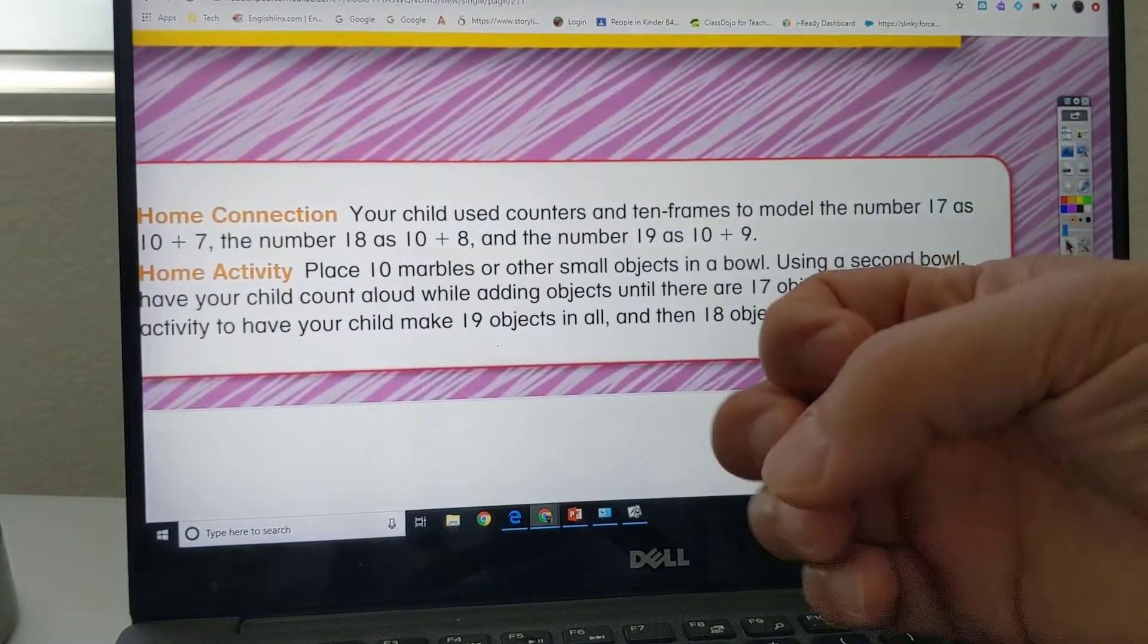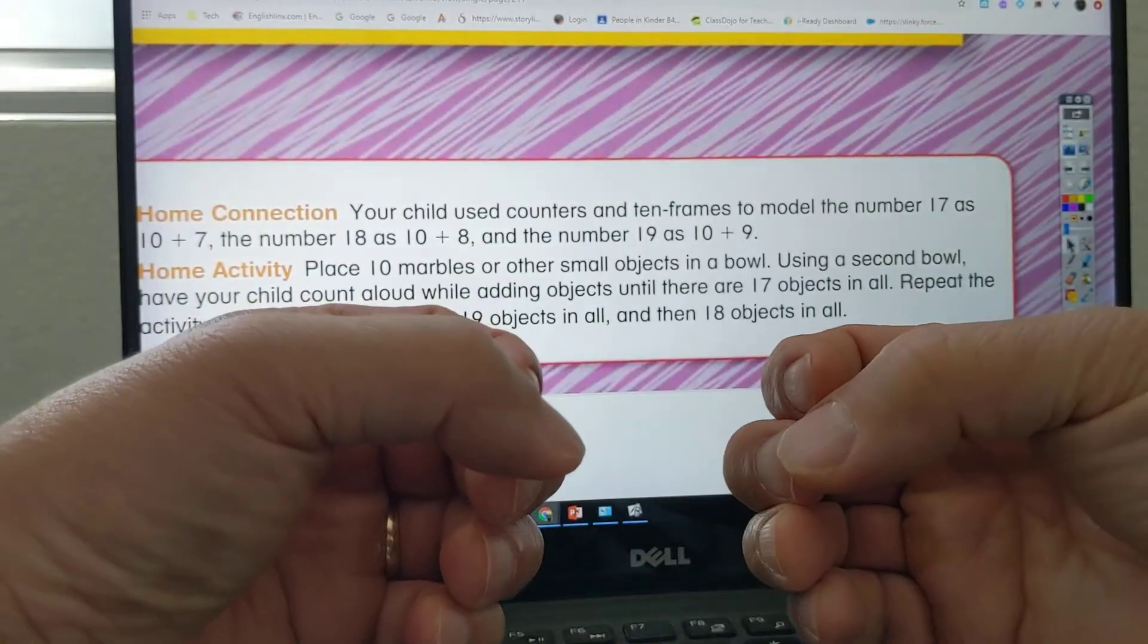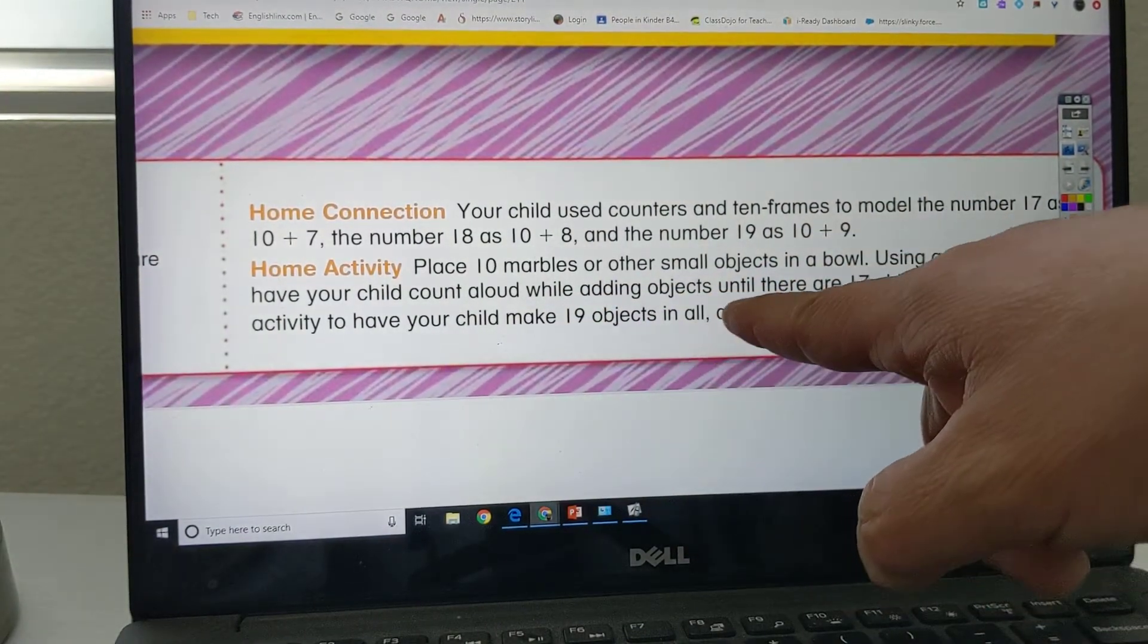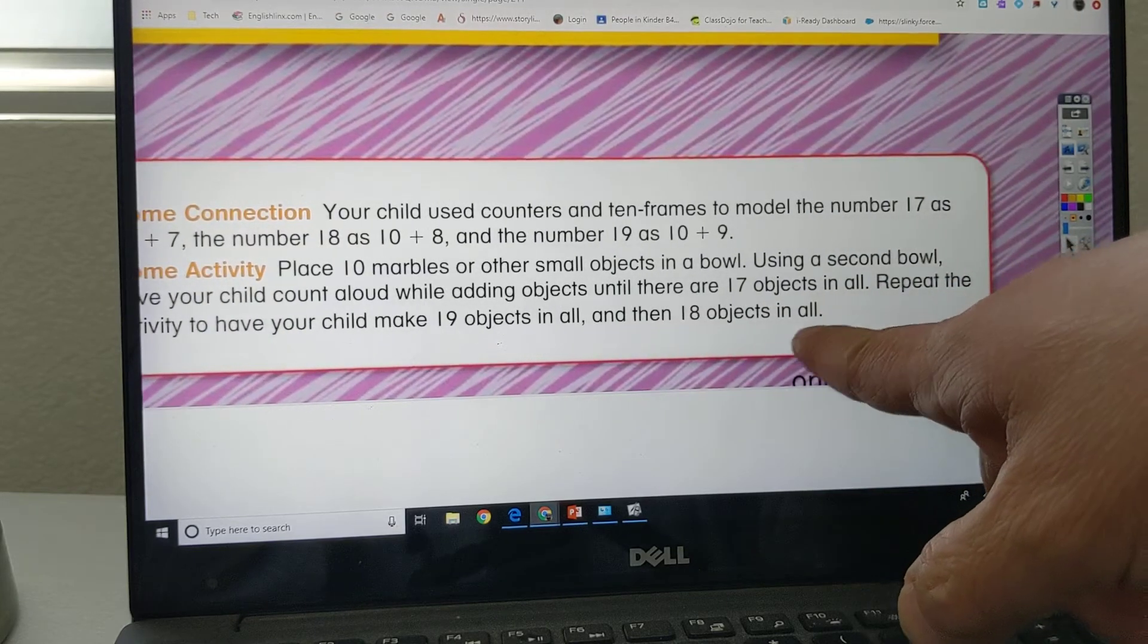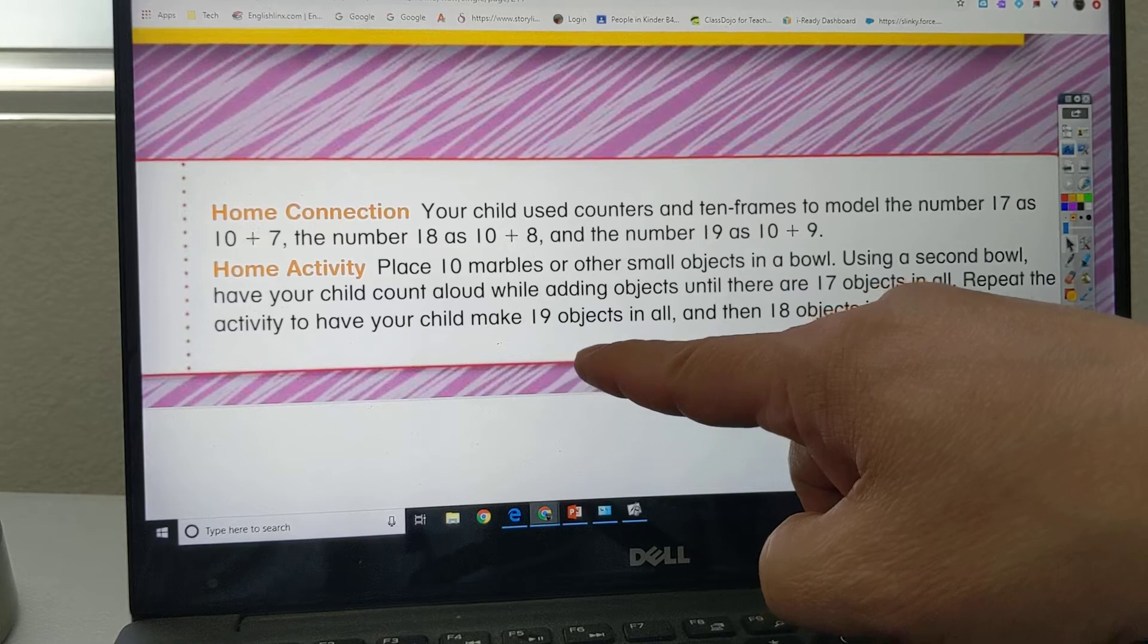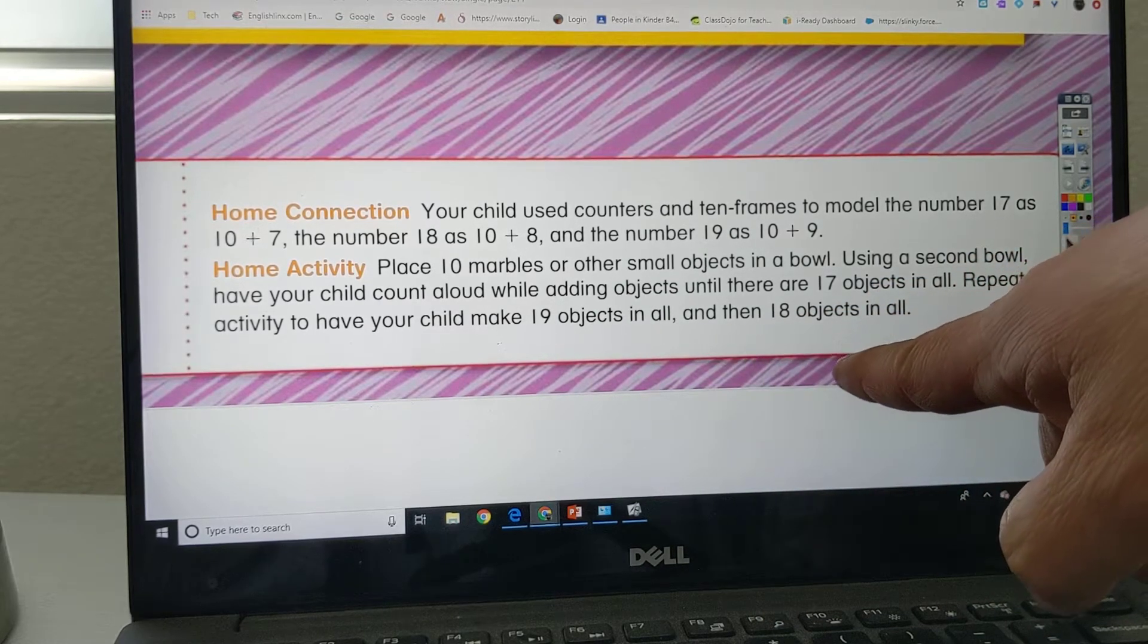Use a second bowl. Now use a second bowl, another bowl. One bowl here, another bowl here. Have your child count aloud while adding objects until there are 17 objects in all. Repeat the activity to have your child make 19 objects in all, and then 18 objects in all.